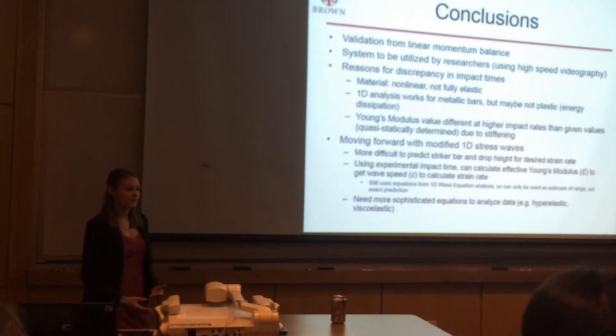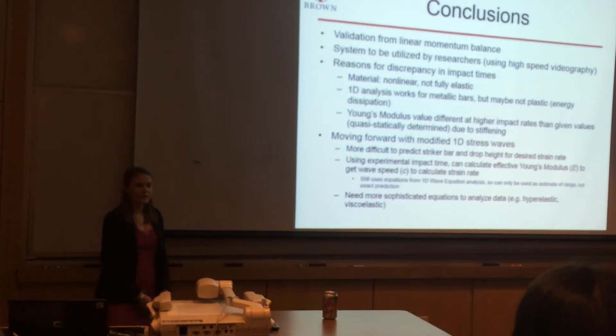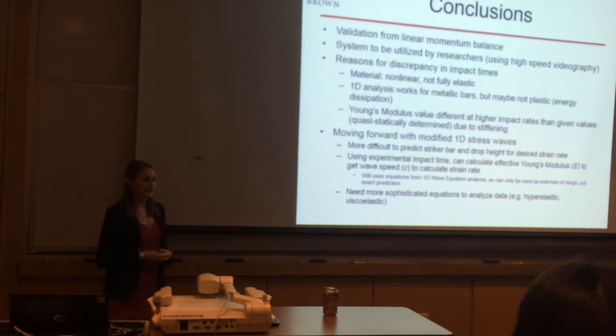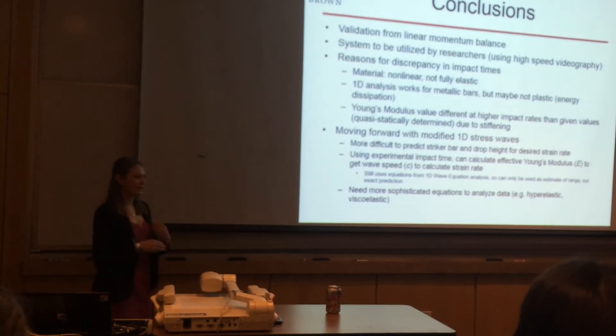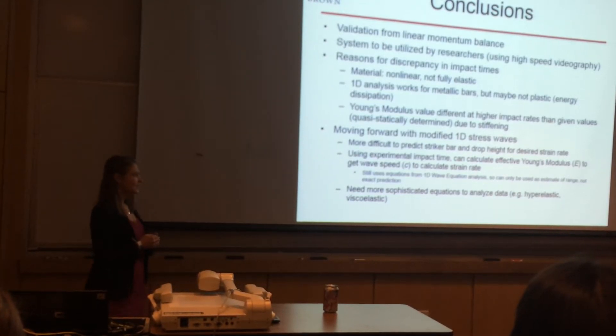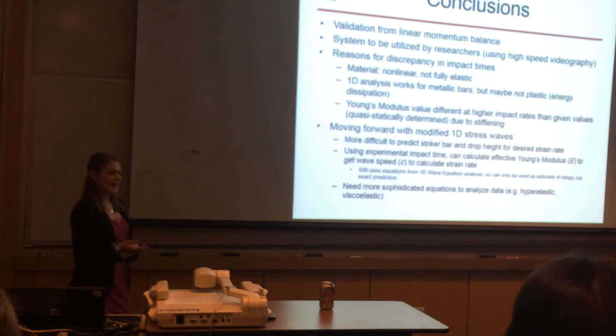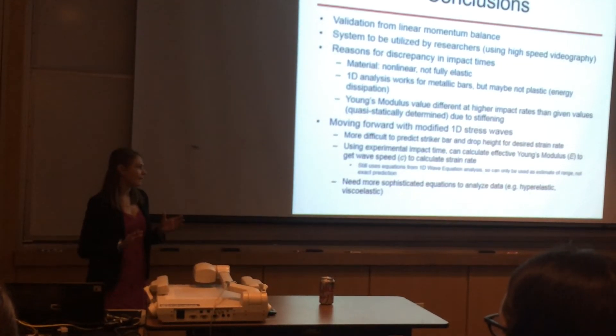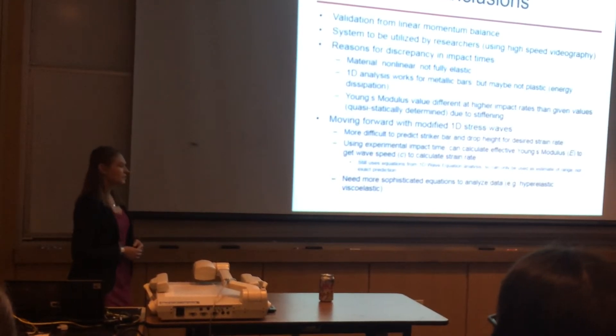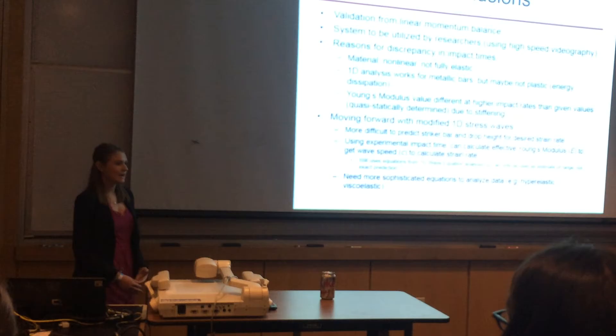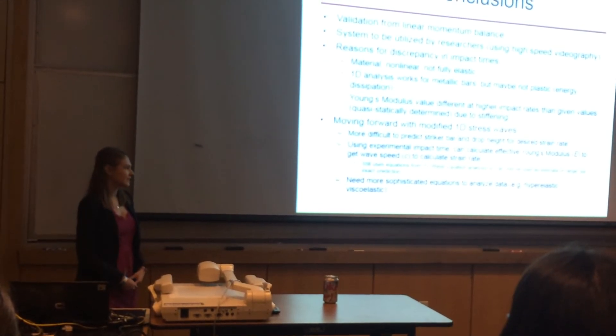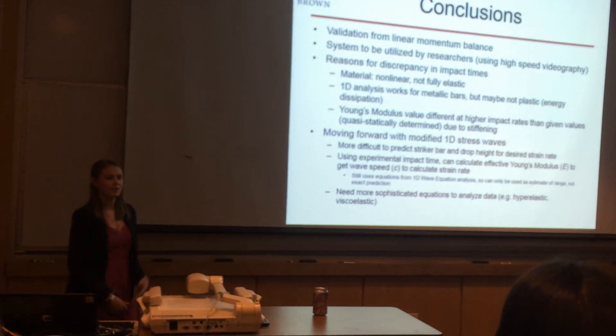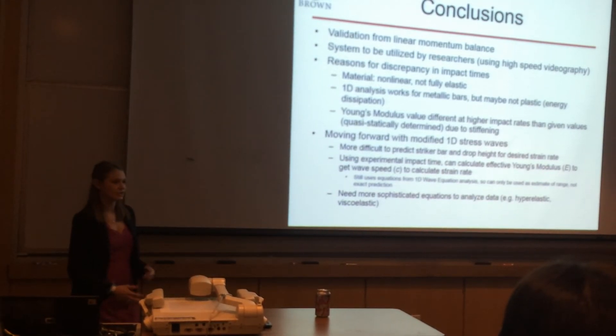Moving forward with the modified 1D stress waves happening in the system it will be more difficult for researchers to predict a striker bar and drop height combination to give a desired strain and strain rate. They can attempt to get an idea for the strain rate that an impact bar will cause by calculating an effective Young's modulus using an experimental impact time and with that Young's modulus they can get the wave speed and then calculate the strain rate but again this would utilize the 1D wave equations so it wouldn't be perfectly accurate but may give them a closer idea of the strain rate. They will in the future need more sophisticated equations to analyze this maybe hyper elastic or viscoelastic material equations in order to predict the strain rate that will happen from a given bar but in general they can still utilize the system along with the high speed camera to obtain data that they can analyze the strain using digital image correlation.